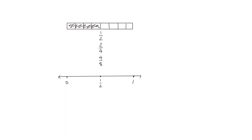Just like we did with the tape diagram, we're now going to divide the two halves in half again. Now we have one, two, three, four pieces, so each of these is a fourth. From zero to the first point is one fourth. From the first point to the second point is two fourths. From the middle half point to the next we have three fourths. And we know that one whole is equivalent to four fourths.